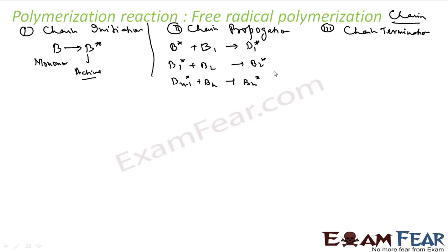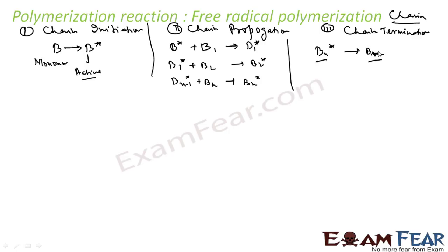Once there are a lot of chains, it has to stop somewhere — when reactants run low, the chain will stop. We use something to initiate the reaction; typically we use benzoyl peroxide, acetyl peroxide, or tetra-butyl peroxide. Benzoyl peroxide is the most commonly used one.